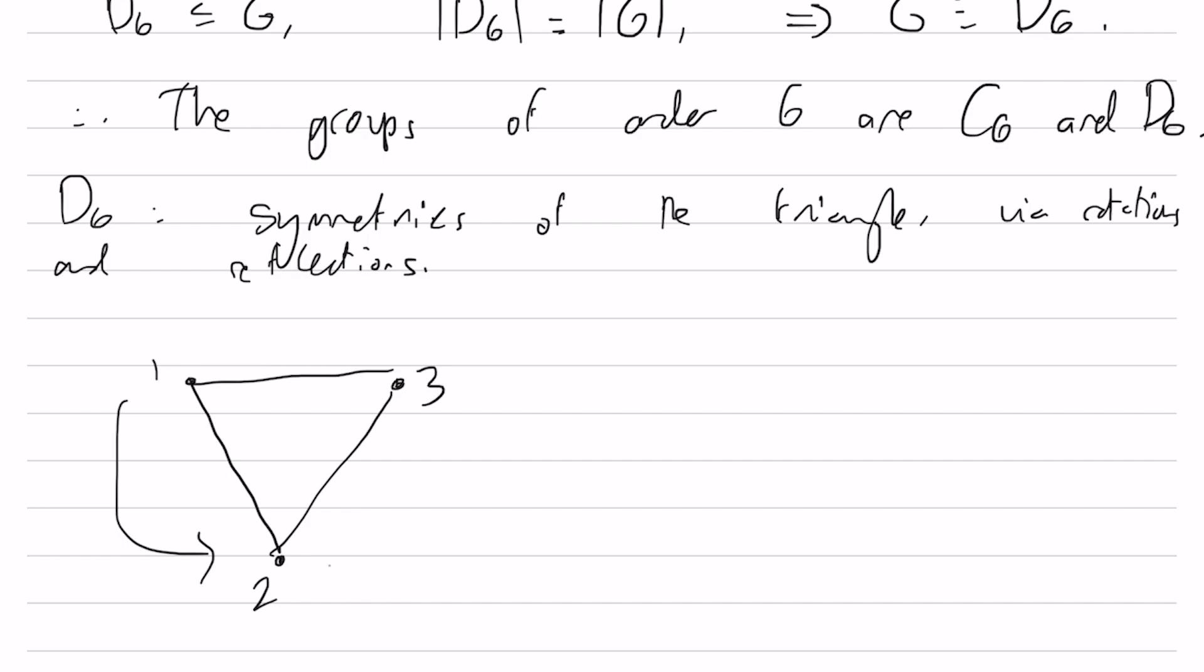...any rotation is just going to be a 3-cycle. So for example, we'd have 1 goes to 2 goes to 3, and if we went the other way, we'd have 1 goes to 3 goes to 2.